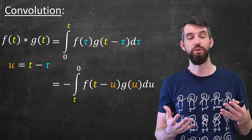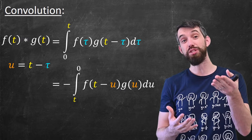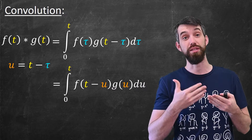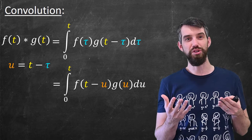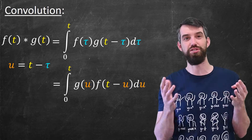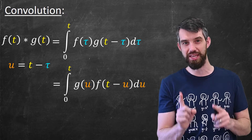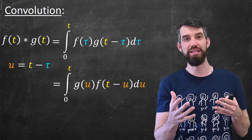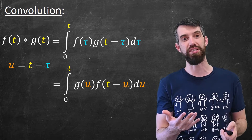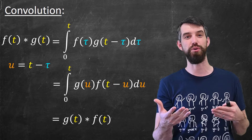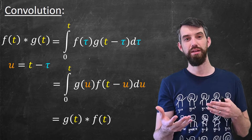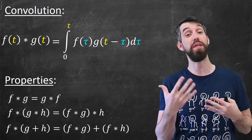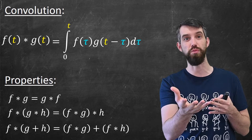So we have limits of integration going from t on the bottom to zero on the top — they're interchanged. There's a negative out the front, so I can use that negative to interchange the limits of integration, giving me the integral from zero up to t of this expression. Then I'm going to alternate the order of f and g — just change which comes first and which comes second. With those rearrangements, the integral I have is now exactly the convolution but with f and g interchanged: this is just the convolution of g with f. And so we have the commutativity property. I'll leave the proofs of the other two properties as an exercise.